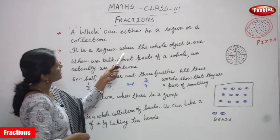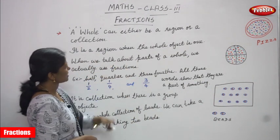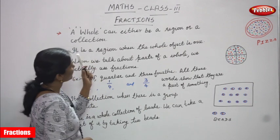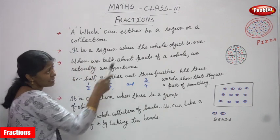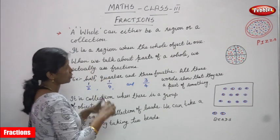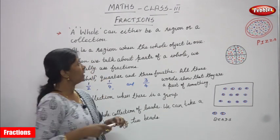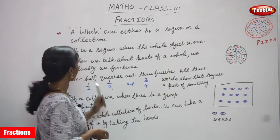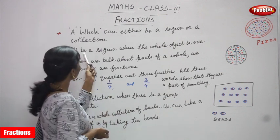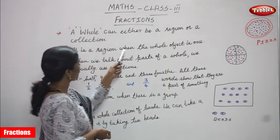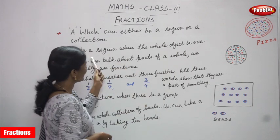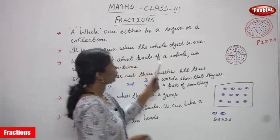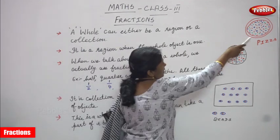It is a region when the whole object is one. It is a region — a part — when the whole object is only one single object.